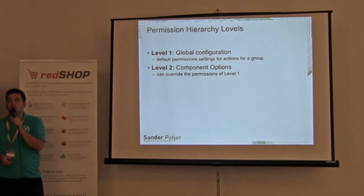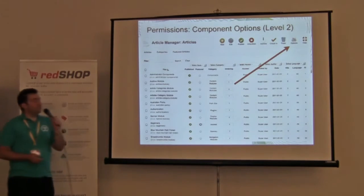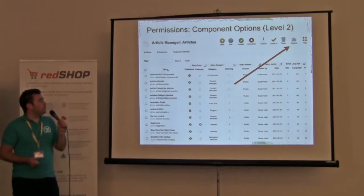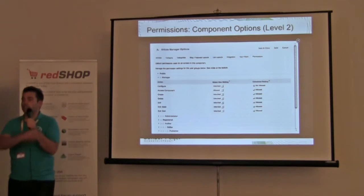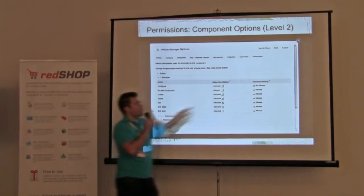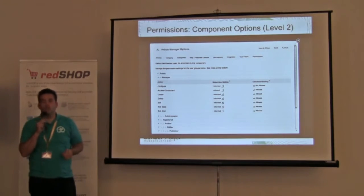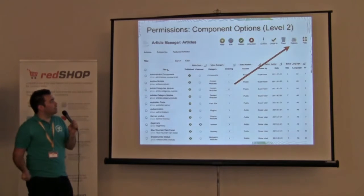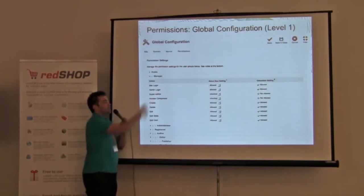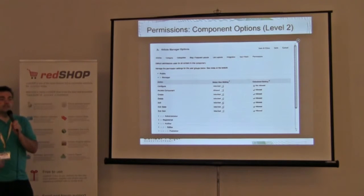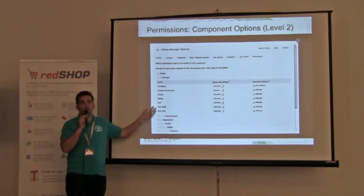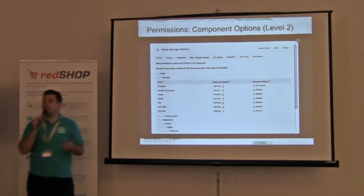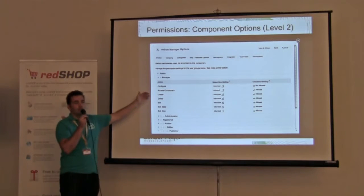Level two is the component options. These can be found under the 'Options' button at the top right of your extension. You get an overview — for example, the article manager options — with a new 'Permissions' tab. At this level, site login and admin login are no longer present (those are global). Here you configure: can somebody access this component, and what are the allowed actions for this extension?